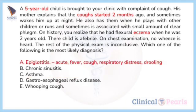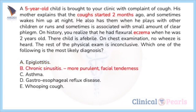Option A: epiglottitis has a more pronounced and acute presentation with fever, cough, respiratory distress, and drooling — the child is usually very ill. Option B: chronic sinusitis may present with nocturnal cough caused by post-nasal drip, but exertional cough is not usually a feature. Besides, the discharges tend to be more thick and purulent, and there is also history of facial tenderness or fullness and recurrent upper respiratory infections.